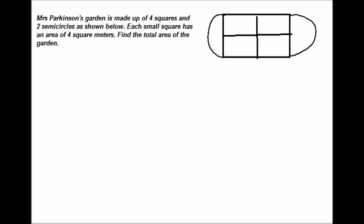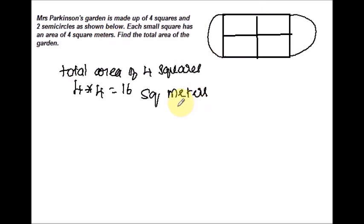Let me take an example. This garden is made up of four squares and two semicircles. Each small square has an area of 4 square meters, so the total area of four squares is 4 times 4 = 16 square meters. Since the area of a small square is 4 square meters, the side of each square is 2 meters. The radius of each semicircle is also equal to 2 meters.